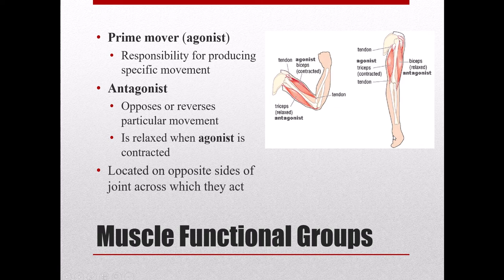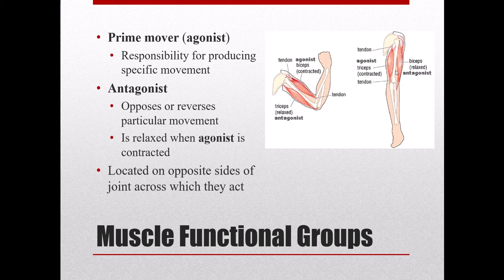Agonist and antagonist muscles are located on opposite sides of the joint at which they are acting. The biceps is anterior and the triceps is posterior, but they're both acting on the elbow joint. When the agonist contracts, the forearm flexes; when the antagonist contracts, the forearm extends — they are antagonistic to each other. What one muscle does, the other undoes: flex, extend, abduct, adduct, pronate, supinate, and so on.